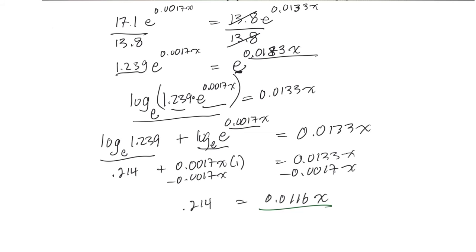And then we'll divide both sides by 0.0116. Let me make sure I've got all my numbers there right. Yeah, I think that's right. Okay, calculator. Divide by 0.0116. That comes out to 18.448, I think. Somewhere on there.